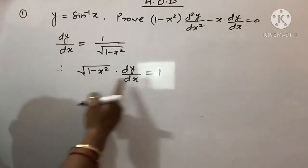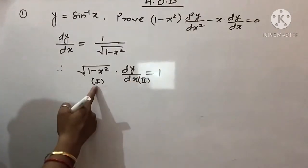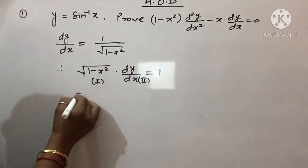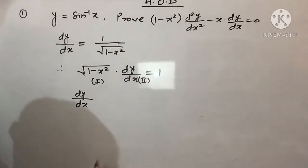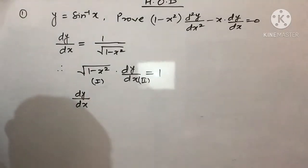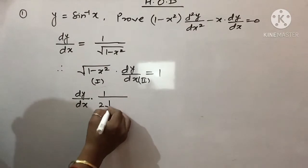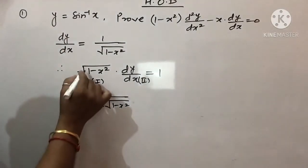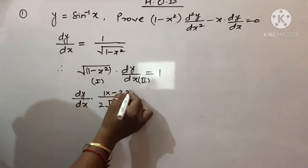Now I will differentiate this. This is my first function, this is my second function. When I differentiate the first function, the second function will be out. So dy/dx will be out. When I differentiate √(1 - x²) using chain rule: 1/(2√(1 - x²)) multiplied by the derivative of (1 - x²), which is -2x.